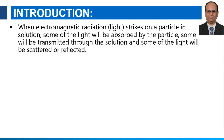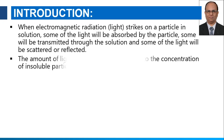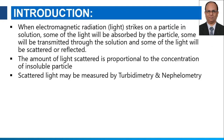In Nephelometry and Turbidometry, when electromagnetic radiation — or light, since we are in the visible region — strikes particles in a solution, some of the light will be absorbed by the particle, some will be transmitted through the solution, and some of the light will be scattered or reflected. The amount of light scattered is proportional to the concentration of insoluble particles, so we can use this technique for quantitative estimation. Scattered light may be measured by Turbidometry and Nephelometry.